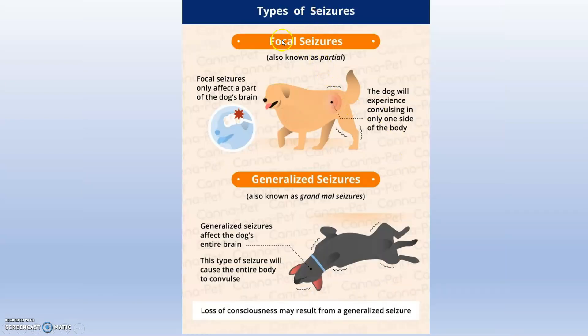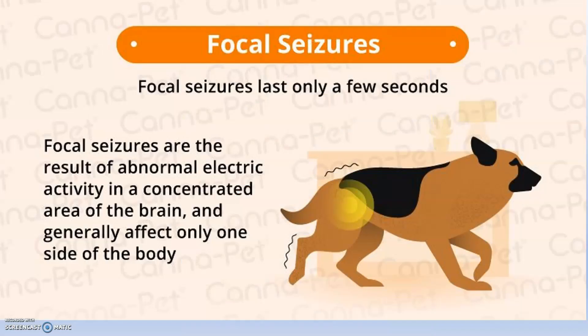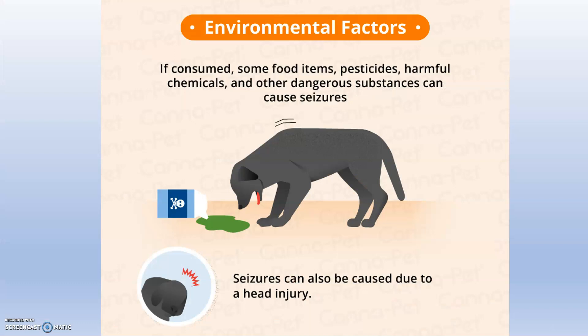Types of seizures: focal seizures affect only a part of the brain, so the dog experiences convulsion in one area only. Generalized seizures involve the entire body. Focal seizures may last only a few seconds and are commonly seen in canine distemper and rabies. Environmental factors such as poisoning or head injury can also lead to seizures. Thank you guys.